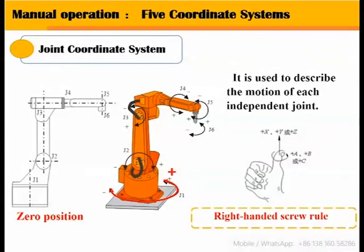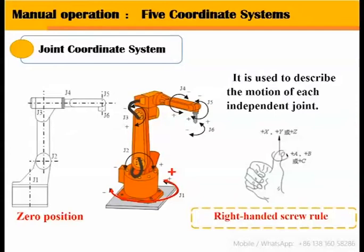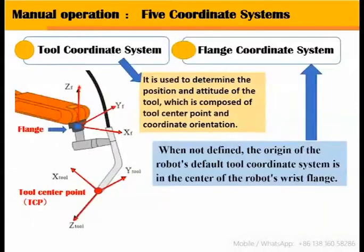For the joint coordinate system, first the zero position is specified. Then, standing behind the robot, the right-hand screw rule is used to determine the rotation direction of each joint.